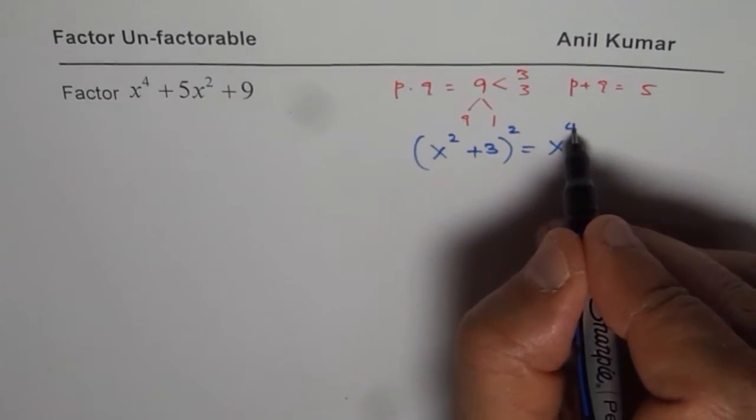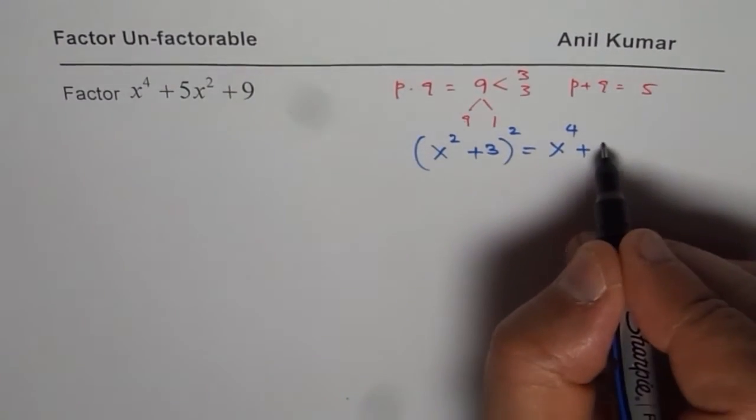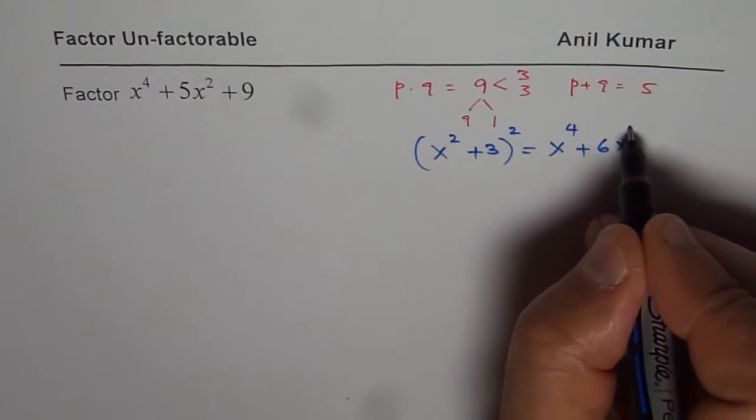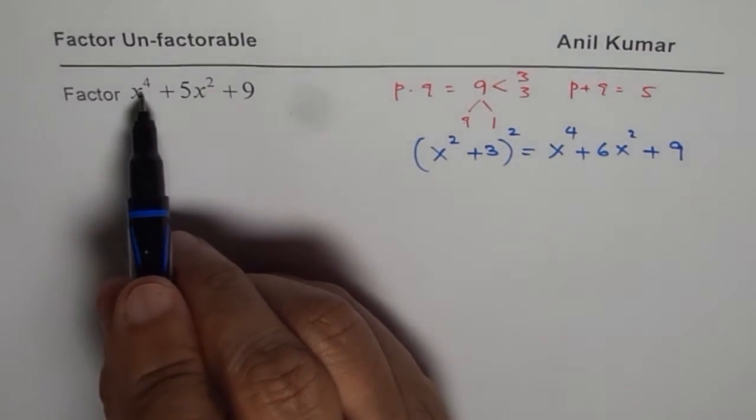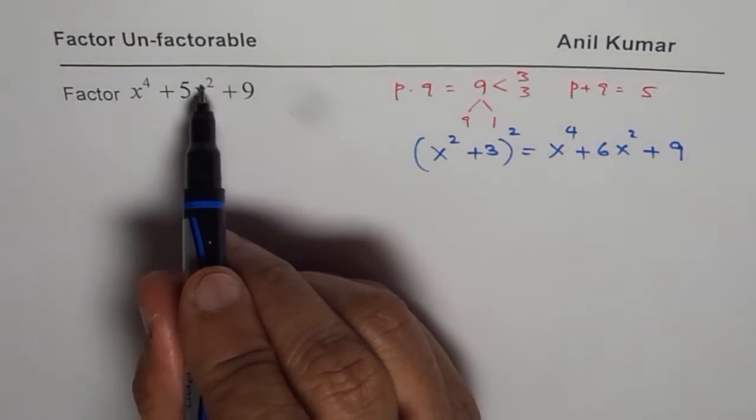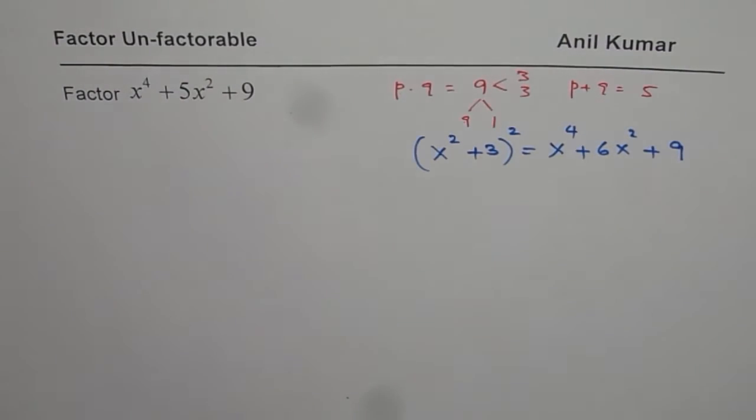I will get x to the power of 4 plus 2ab, that means 6x squared plus 9. But the question here is x to the power of 4 plus 5x squared plus 9. Does that give you an idea of factoring? Yes it does.